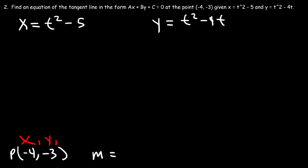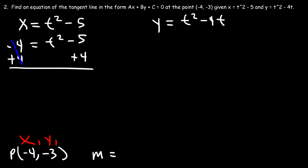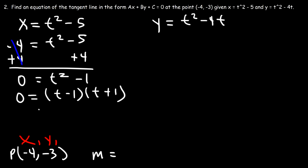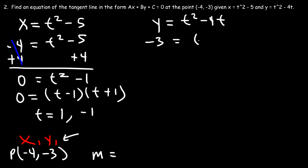Since we have x and y, what we need to find is the value of t. Let's replace x with negative 4 and calculate the value of t. Adding 4 to both sides, we have 0 equals t squared minus 1. Factoring using the difference of squares method, that's t minus 1 times t plus 1. So t can be equal to positive 1 or negative 1, and either will give us an x value of negative 4. Now let's do the same thing with y, where y equals negative 3, and solve for t.